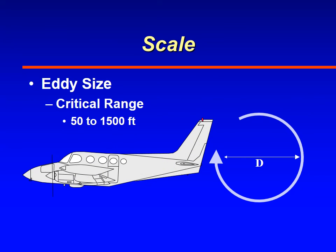As for the size that affects aircraft — we've looked at all the different sizes of eddies from hurricanes down to little thermals — the ones that affect aircraft are typically in the size range of between 50 to 1,500 feet in diameter.